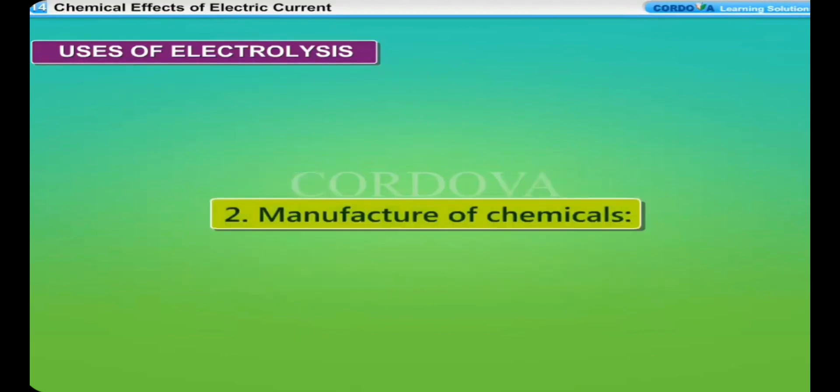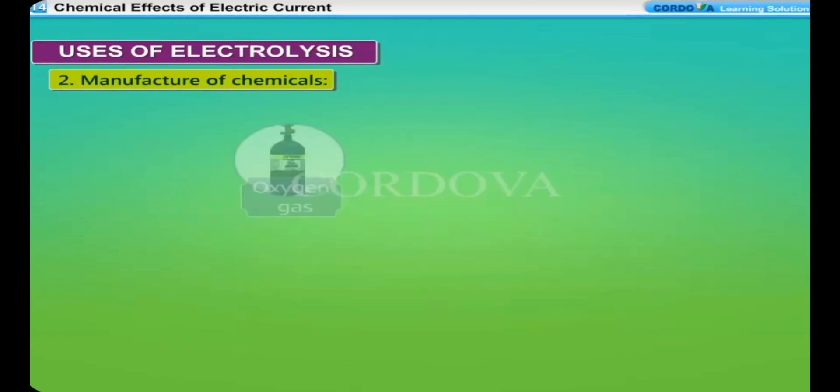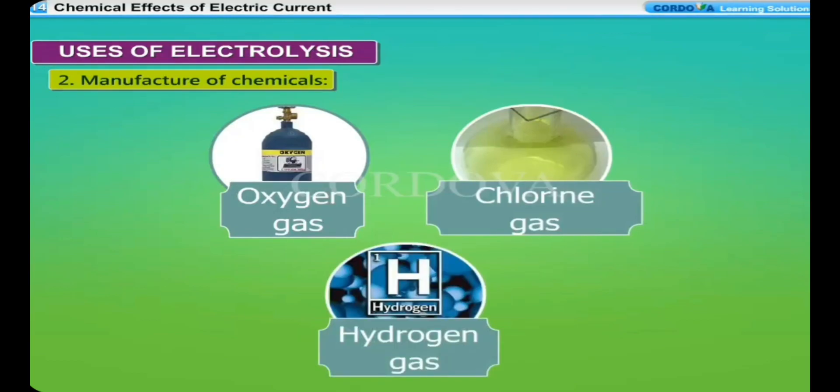Manufacture of chemicals: Electrolysis is used for the manufacture of chemicals which are used in industries in large quantities. Manufacture of oxygen gas, chlorine gas and hydrogen gas is done by electrolysis.